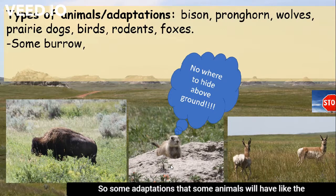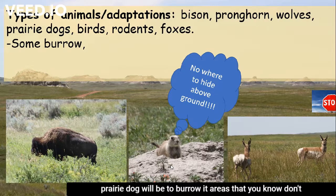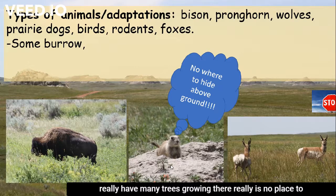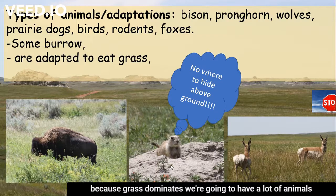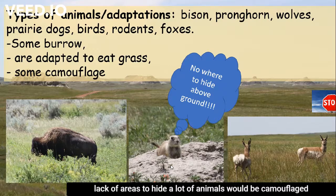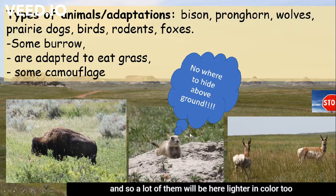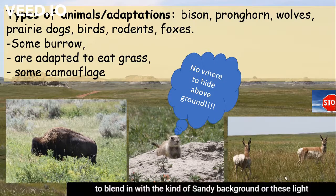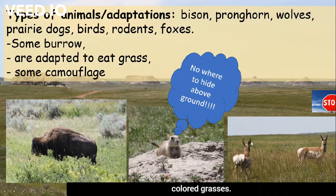Some adaptations that animals will have — like the prairie dog — will be to burrow. In areas that don't really have many trees growing, there really is no place to hide, so a lot of animals will be burrowing below ground. Because grass dominates, we're going to have a lot of animals that are adapted to eat grass. And because there's a lack of areas to hide, a lot of animals will be camouflaged — many will be lighter in color to blend in with the sandy background or the light-colored grasses.